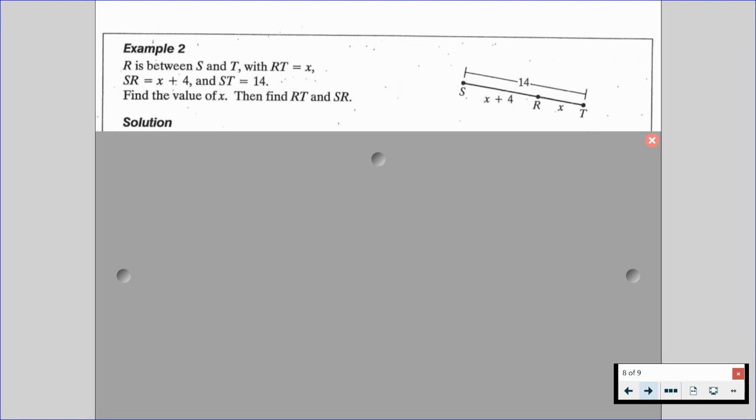And if we're looking at it through an example, point R is between points S and T with the length of segment RT equaling the value of x. We also know the length of SR is going to be equal to x plus 4 and the length of segment ST is going to be 14. We want to first find the value of x and then find the length of segment RT and SR. So we have a diagram that is given to us for now.